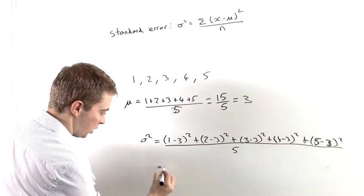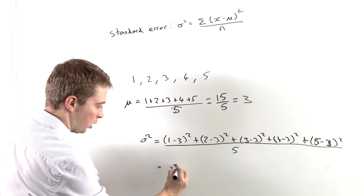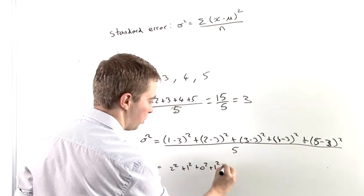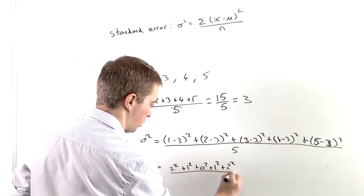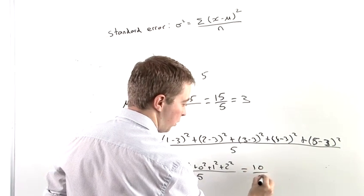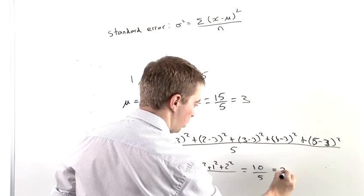So this is 2 squared, plus 1 squared, plus 0 squared, plus 1 squared, plus 2 squared, over 5, which is 10 over 5, which is equal to 2.